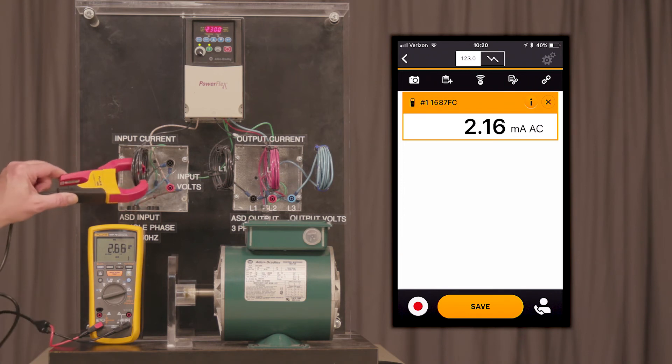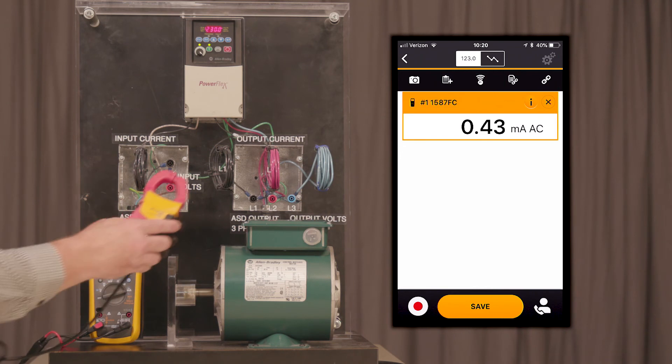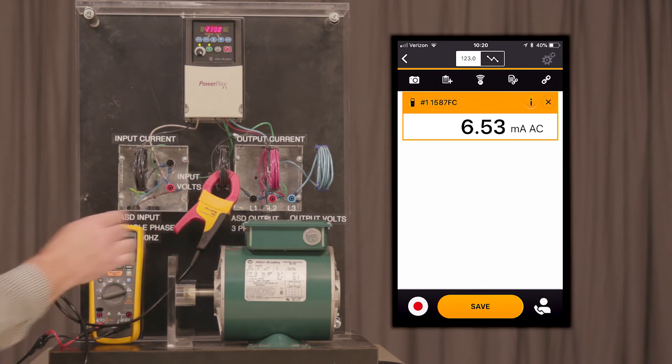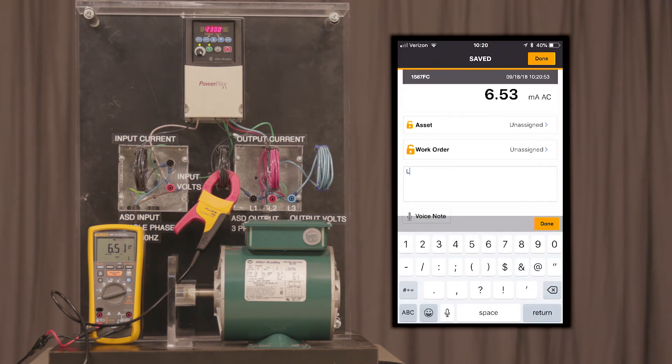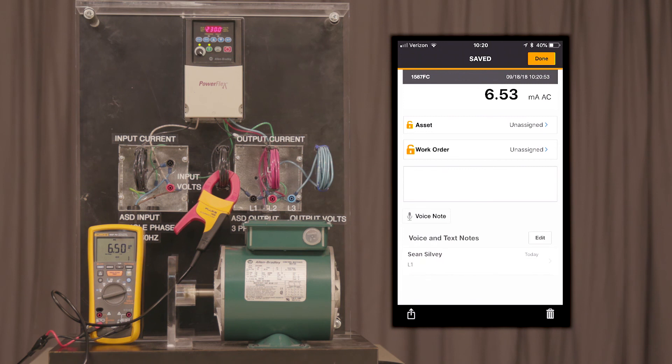Let's go ahead and now make a measurement on the output of the VFD for L1, L2, and L3. We're going to go ahead and save this measurement for L1, 6.5 amps. You will repeat this for all three phases.